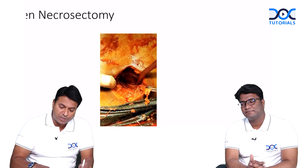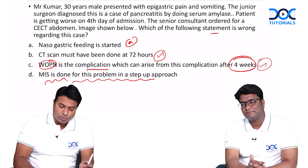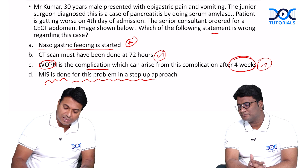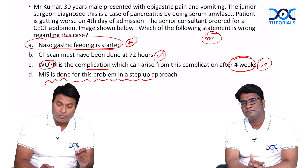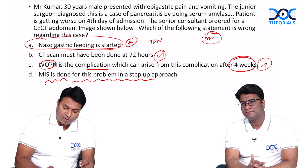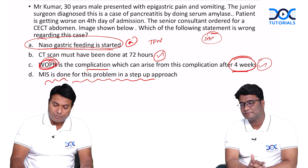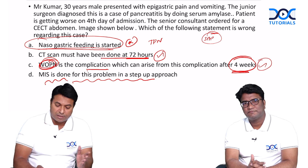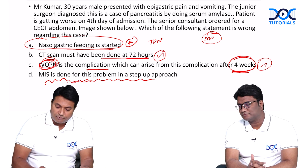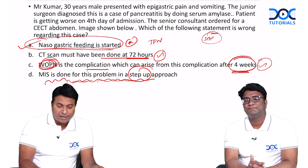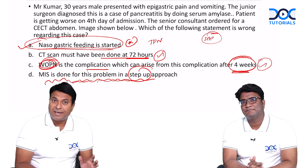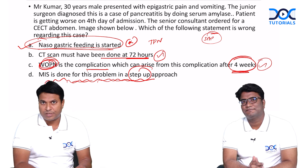From this question, you can come to a conclusion about which is the wrong answer — it is a straightforward PG-level question. The answer is nasogastric feeding is started, which is wrong because this is a case of severe acute pancreatitis and we should not start nasogastric feeding; we should only go for TPN. Walled-off pancreatic necrosis is seen after four weeks is correct. CT scan must be done at 72 hours or later is correct. MIS in a step-up approach is correct. So the answer is A. That completes the discussion of this integrated surgery and radiology question.